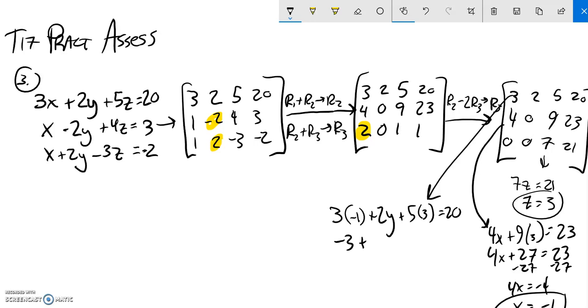So negative three plus two Y plus fifteen equals twenty. I'm just going to subtract fifteen from both sides, that makes five. Add three, it makes eight. So two Y is eight, divided by two, looks like Y must be four. So I can write my solution out.